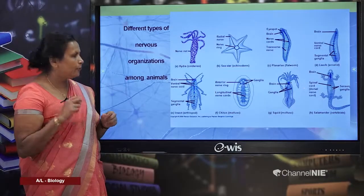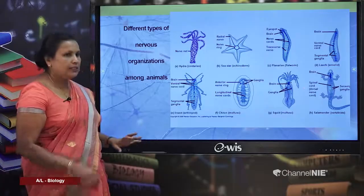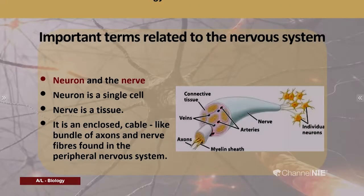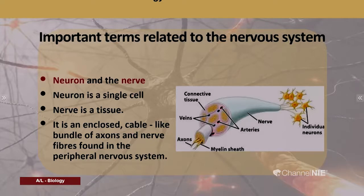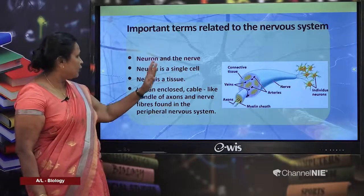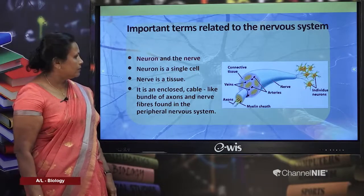Now I want to explain a few important words related to the nervous system: neuron and nerve. A neuron is a single cell; a nerve is a tissue. The structure of a nerve is made up of a number of nerve fibers from neurons, enclosed in fibrous tissue.